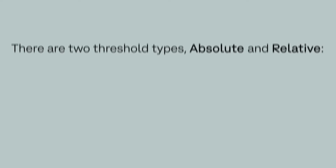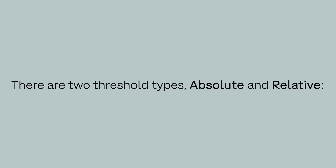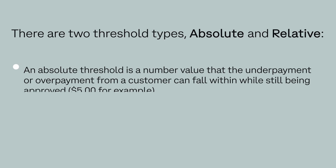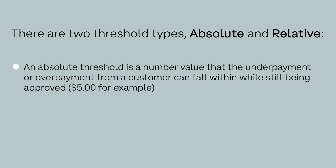There are two threshold types: absolute and relative. An absolute threshold is a number value that the underpayment or overpayment from a customer can fall within while still being approved — $5, for example.